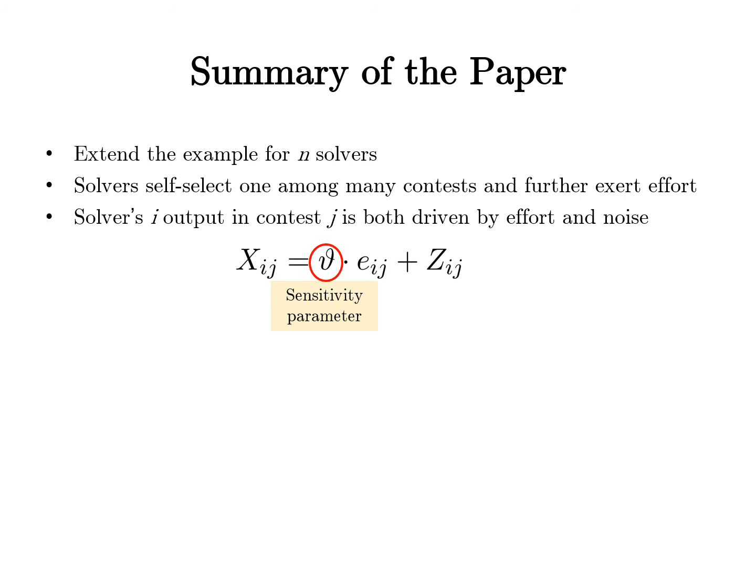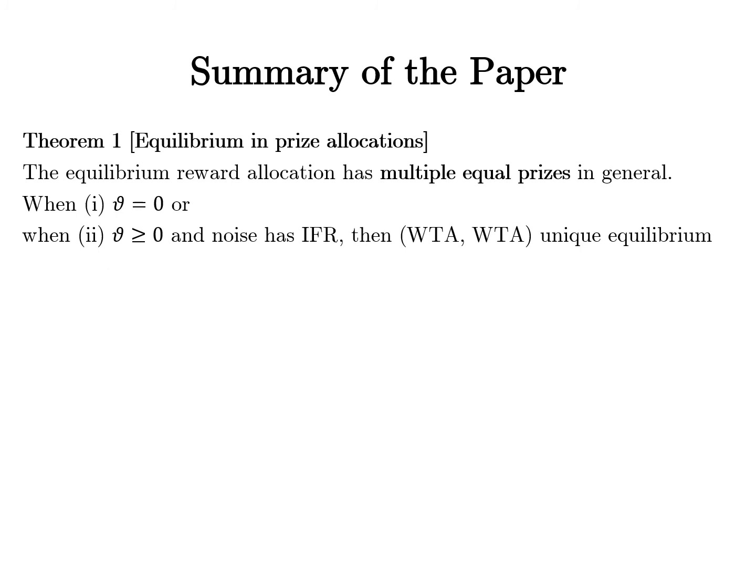Our first main result: we prove that there exists an equilibrium allocation in pure strategies where each firm allocates multiple prizes of equal size. The precise form of the allocation depends on the noise distribution and theta. However, when theta equals 0, or when the noise distribution has an increasing failure rate (IFR), then both firms should choose the winner-takes-all prize — and that's the unique prize allocation equilibrium. Distributions such as the Gumbel, uniform, and normal are all IFR distributions, and every log-concave distribution is also IFR.